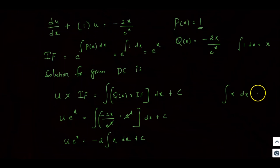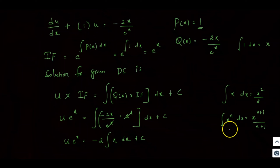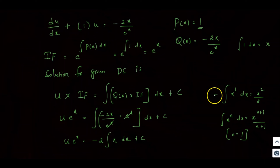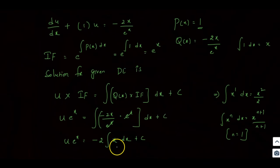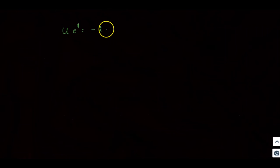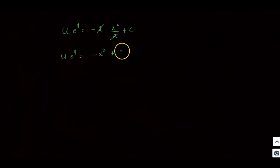Now, ∫x dx equals x²/2 by the general formula ∫x^n dx = x^(n+1)/(n+1). So: u · e^x = −2 · (x²/2) + C. The 2 and 2 cancel, so u · e^x = −x² + C.